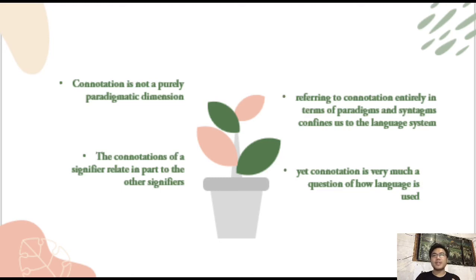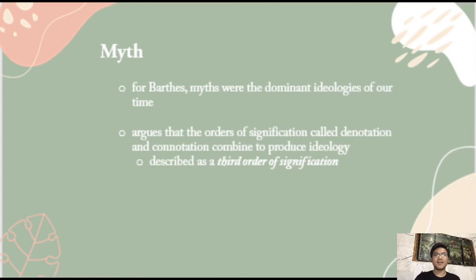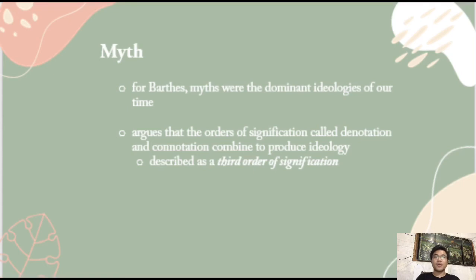Referring to connotation entirely in terms of paradigms and syntagms confines us to the language system. Yet connotation is very much a question of how language is used. Related to connotation is what Roland Barthes refers to as myth. Barthes argued that the orders of signification called denotation and connotation combined to produce an ideology, which has been described as a third order of signification.